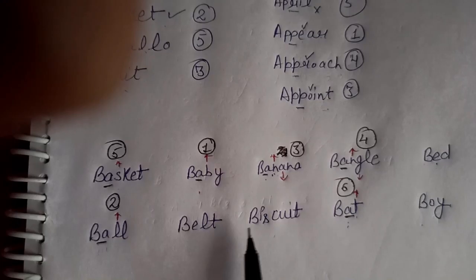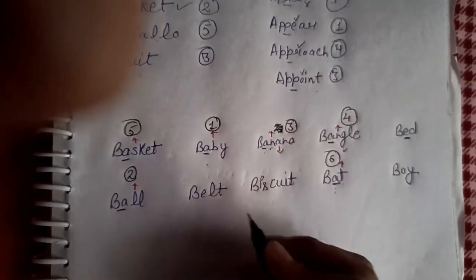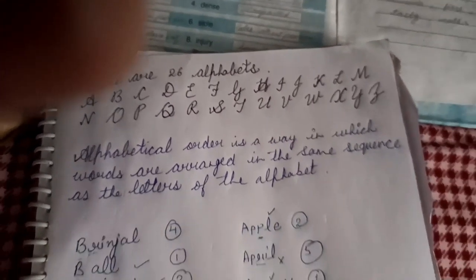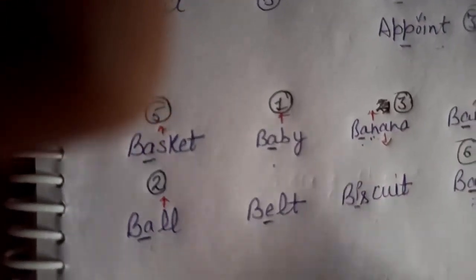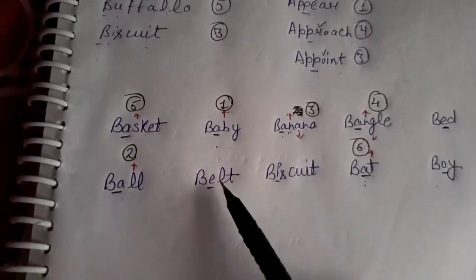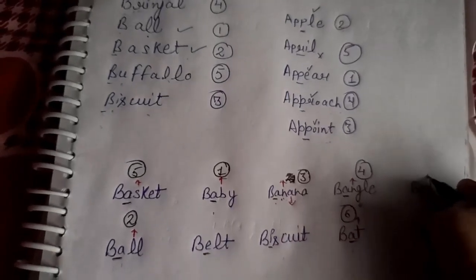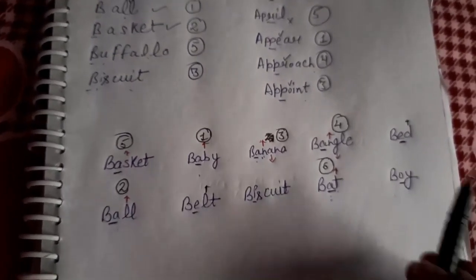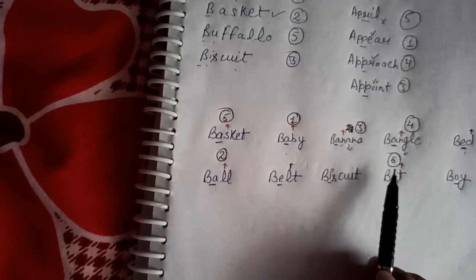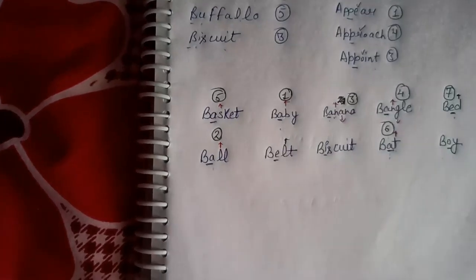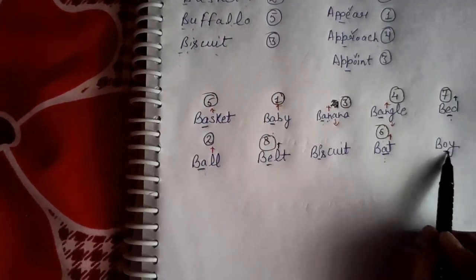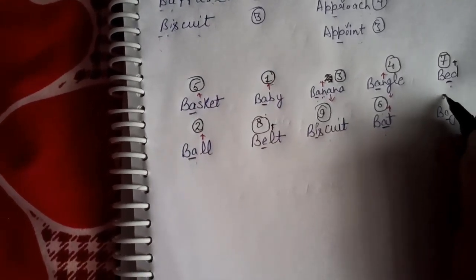Now we have four words left: bed, belt, biscuit, and boy. The first letter of each is B, so we look at the second letter: E, E, I, O. E comes first, so we look at those two words. The third letter of bed is D and belt is L. D comes first, so bed is seventh and belt is eighth. I comes before O, so biscuit is ninth and boy is tenth.